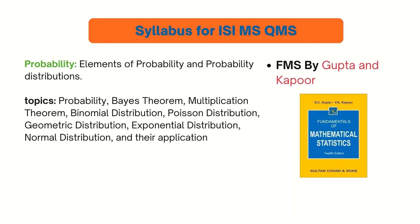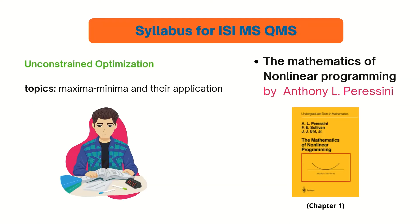For the probability and statistics part, I recommend the book Fundamentals of Mathematical Statistics by Gupta and Kapoor — a very popular book. Although the syllabus doesn't explicitly mention topics like binomial distribution and other distributions, questions are asked from them. In the year I appeared, 2019, questions were asked from these distributions, so don't forget to study all distributions and solve related questions.